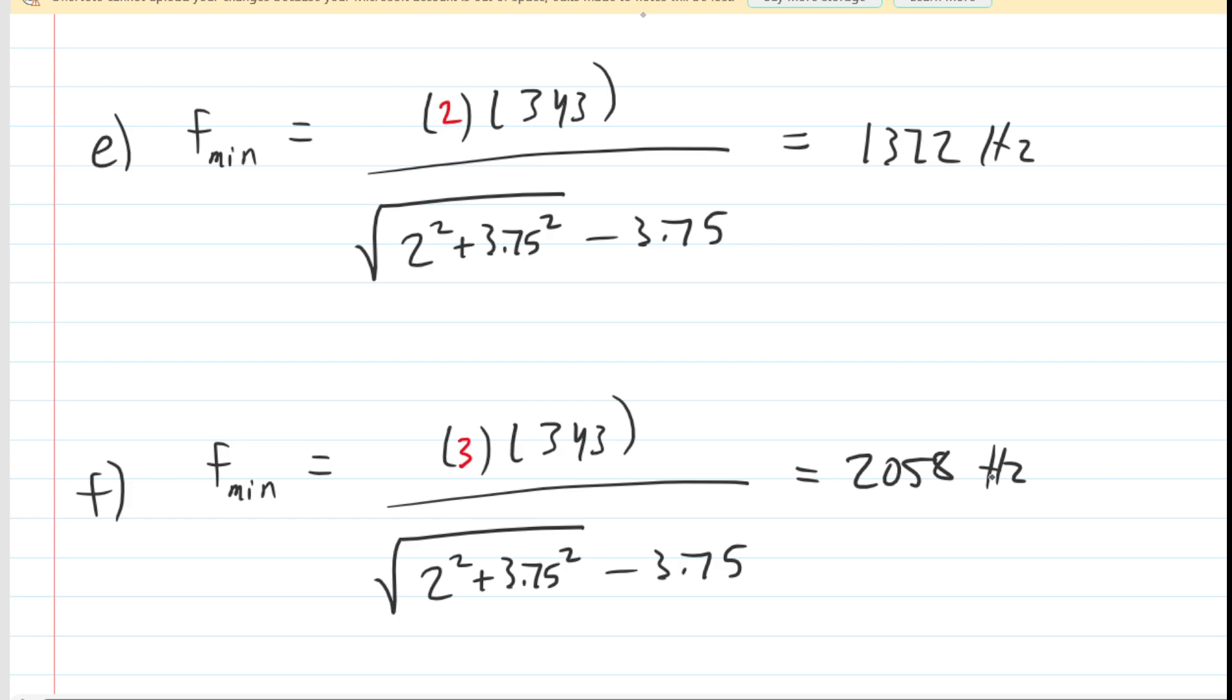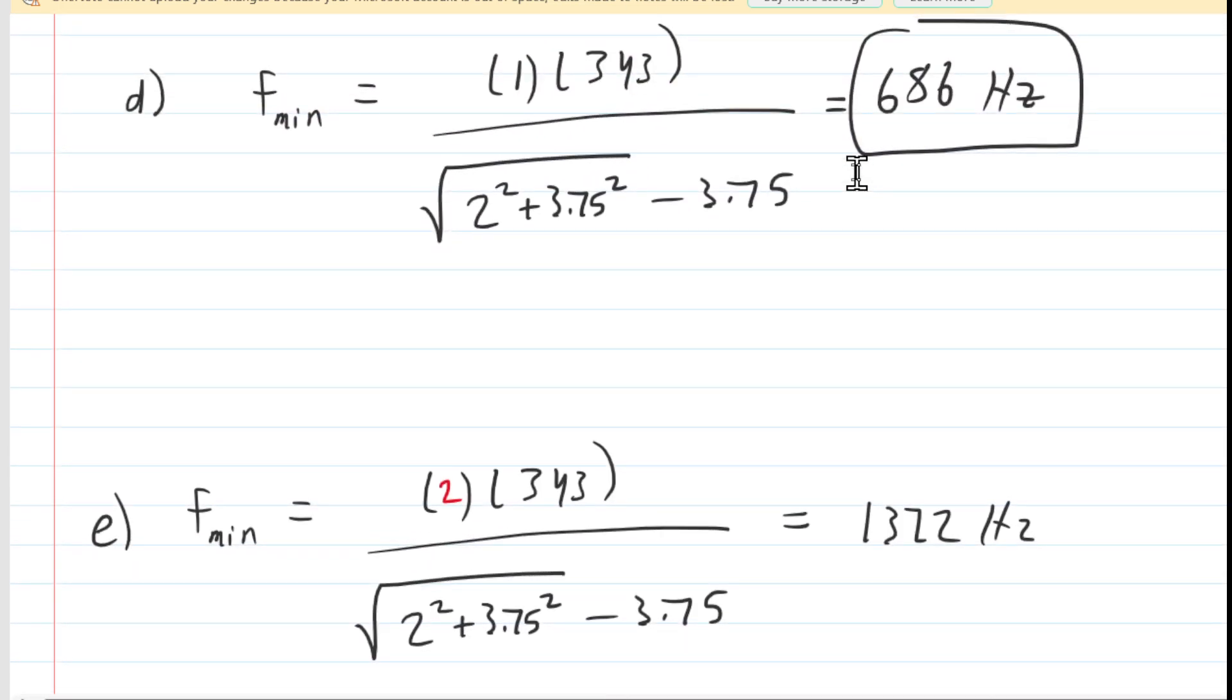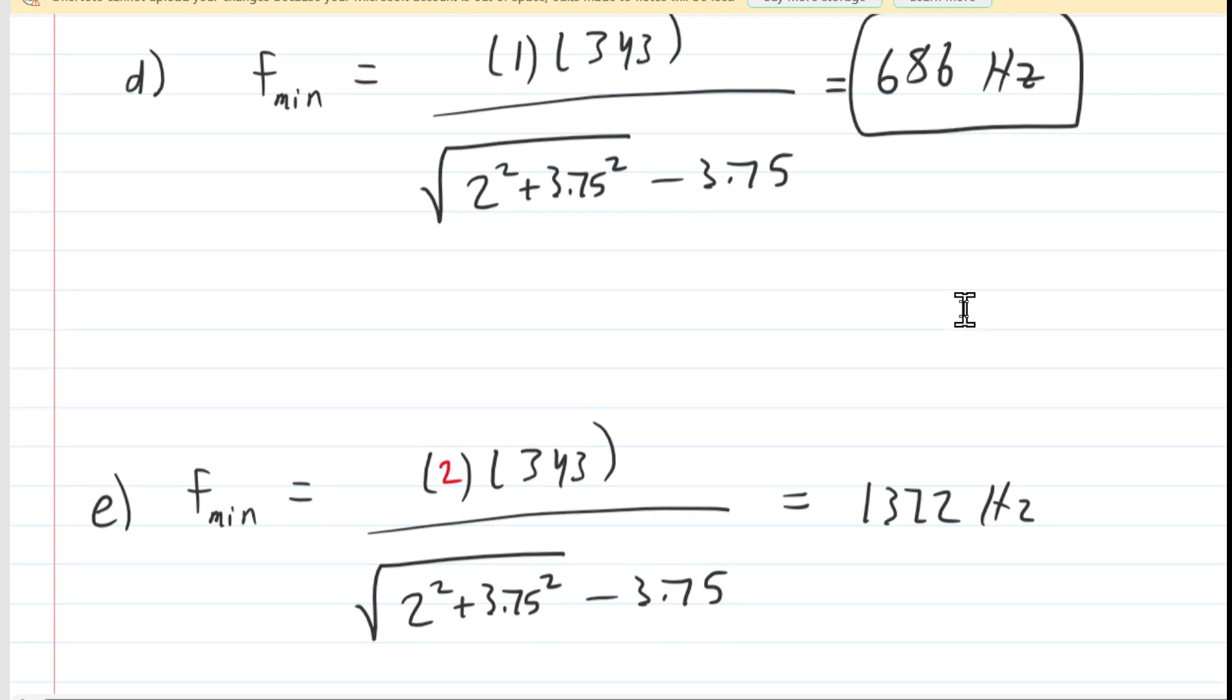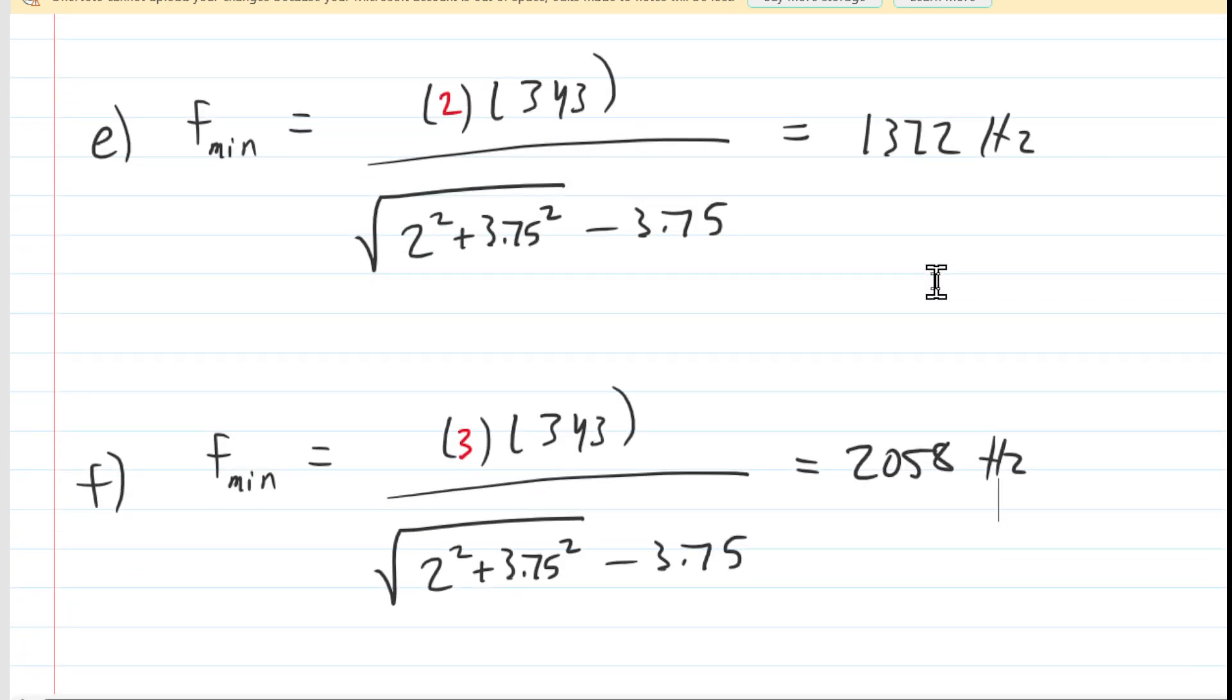But again, we want the factor by which we multiplied the answer from part d. In part d, we had 686 hertz. So we take 1,372, divide by 686, and we would get 2. So for part e, the final answer is that the factor is 2.